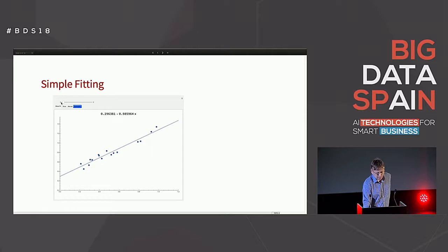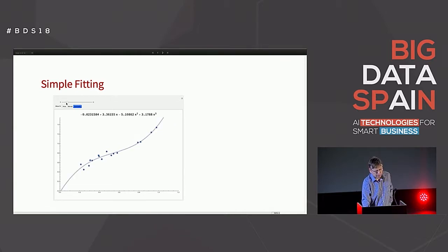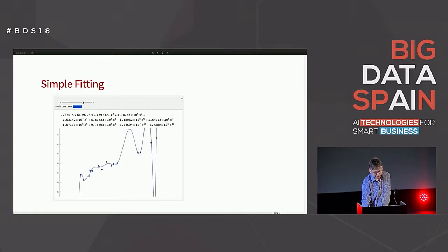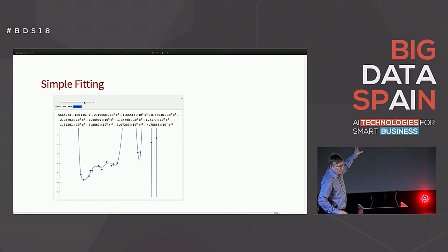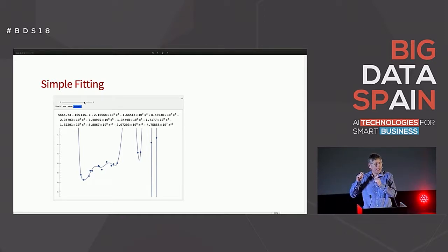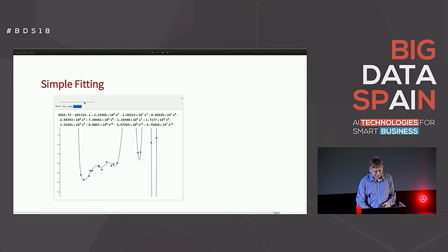We can change the model and try to adapt to different kinds of data — if the data wasn't straight we could say what if our model was curved. But we're always having to intervene as a human. And if I intervene too much and have a really rich model, crazy stuff starts happening. This is called overfitting: I've given it too much freedom in the model, so instead of capturing the essence of what's going on, it tries to capture the noise and randomness. We end up with a model that doesn't help us in any prediction.